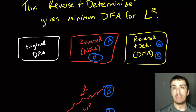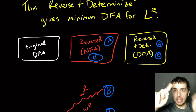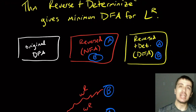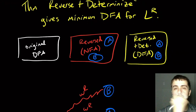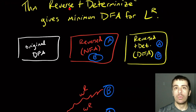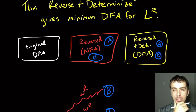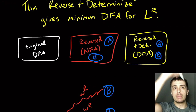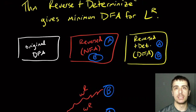This DFA must have the minimum number of states for its language - the reverse language by construction - and so by doing this process twice we get a DFA that's minimum for the original language, which is pretty cool. What is the runtime? It's exponential in the worst case because the NFA to DFA conversion may take exponential time, and you have to do it twice. But in practice it's very fast and very easy to implement once you have the reverse process and the NFA-to-DFA conversion, which are both not hard to implement. So hopefully that was interesting - leave thoughts in the comments, please like and subscribe, and thanks for watching.